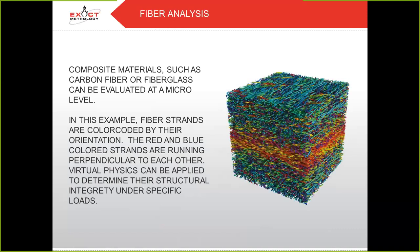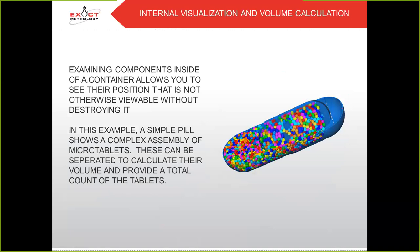In fiber analysis, composite materials such as carbon fiber or fiberglass can be evaluated at the micro level. Fiber strands are color-coded by their orientation — the red and blue colored strands are running perpendicular to each other. Virtual physics can be applied to determine their structural integrity under specific loads. Examining components inside a container allows you to see their position without destroying it — for example, a simple pill showing a complex assembly of microtablets, which can be separated to calculate their volume and provide a total count.